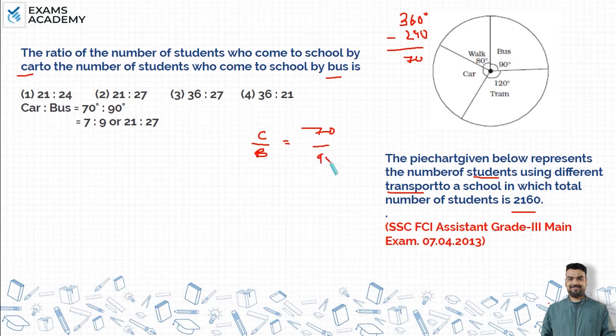The bus is 90 degrees. So if I look at the ratio, car to bus is 70 to 90, which simplifies to 7 ratio 9. But in the options, there is no 7:9.